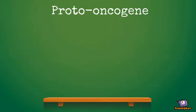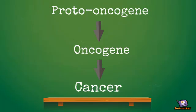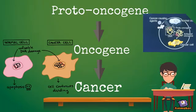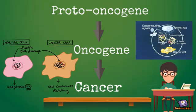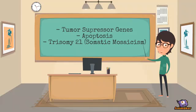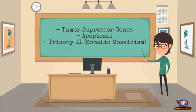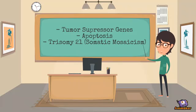Proto-oncogenes are normal cells that become oncogenes when a mutation occurs. If the oncogene continues to evolve in normal cell growth, it could cause cancer cells or tumor cells to grow. Tumor suppressor genes detect damage in the cell and work with CDKs and cyclins to stop cell growth until the damage is repaired.